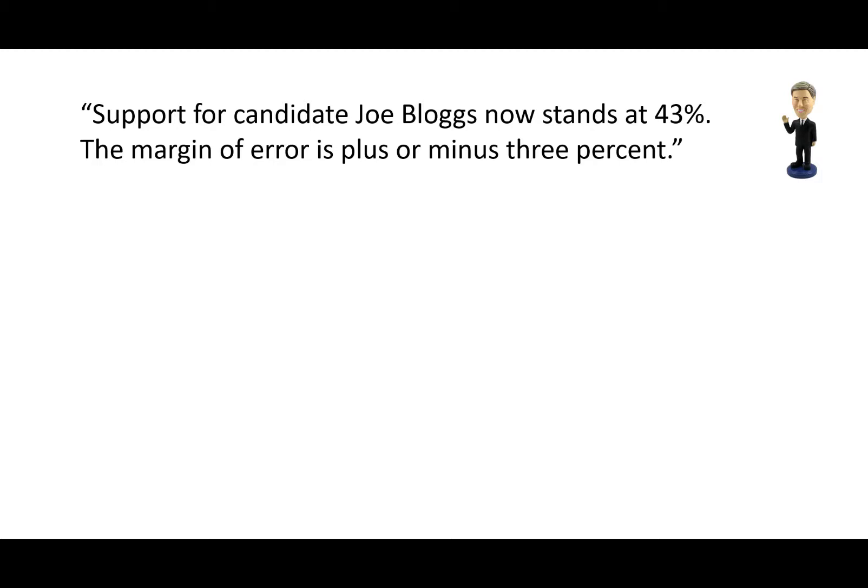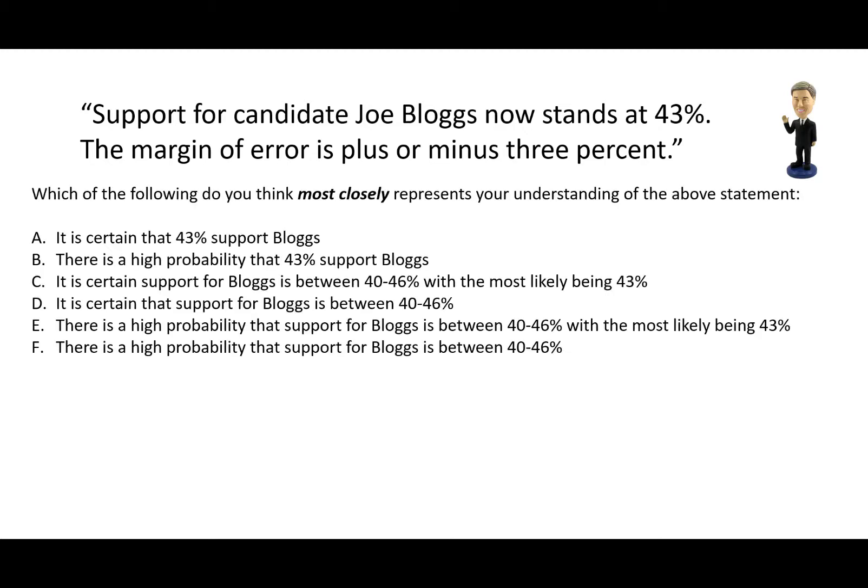You will all have seen or heard statements like this from pollsters during an election campaign: 'Support for candidate Joe Blogs now stands at 43%, the margin of error is plus or minus 3%.' Which of the following most closely represents your understanding? A: it's certain that 43% support Blogs. B: there's a high probability that 43% support Blogs. C: it's certain support is between 40% and 46%, with the most likely being 43%. D: it's certain that support is between 40% and 46%. E: there's a high probability that support is between 40% and 46%, with the most likely being 43%. F: there's a high probability that support is between 40% and 46%.